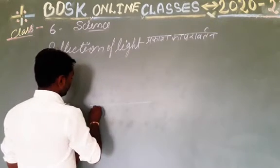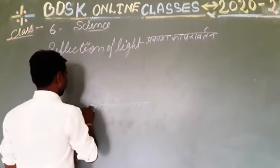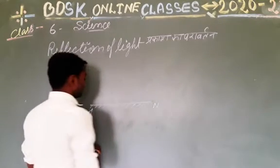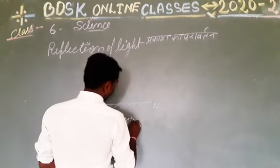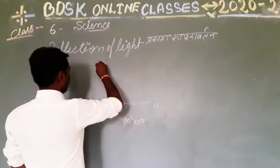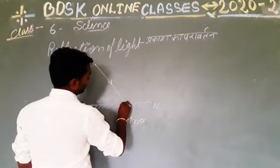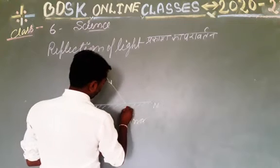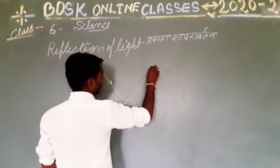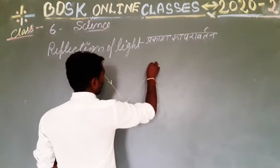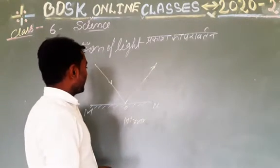Suppose that this is a smooth surface MN — that is, a mirror. When a ray of light is incident on a point O on the mirror, it goes back. This is called reflection of light.